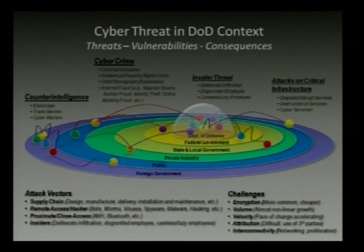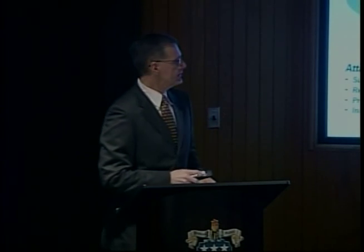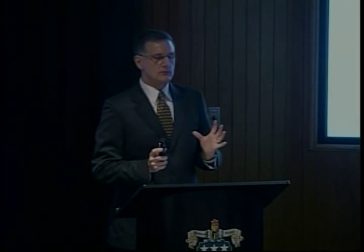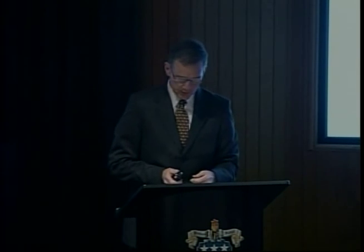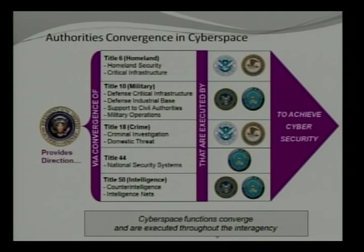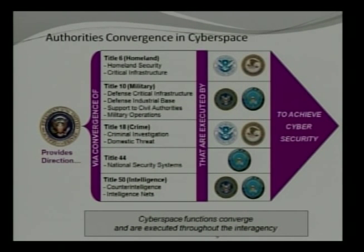What are the existing legal obligations and roles assigned so far? Looking from the defense side, we have many different titles in the U.S. Code where organizations are given responsibilities. Homeland Security, Title VI, Title X — we're most familiar with the military side, under which U.S. Cyber Command has been stood up. Title 18 covers crime investigation and the Department of Justice. Title 44, Title 50 covers the intelligence side — that's the other hat General Alexander wears as head of NSA, complementary to his Title X role with U.S. Cyber Command. The key is the executive providing direction and all these organizations working together to produce cyber security.